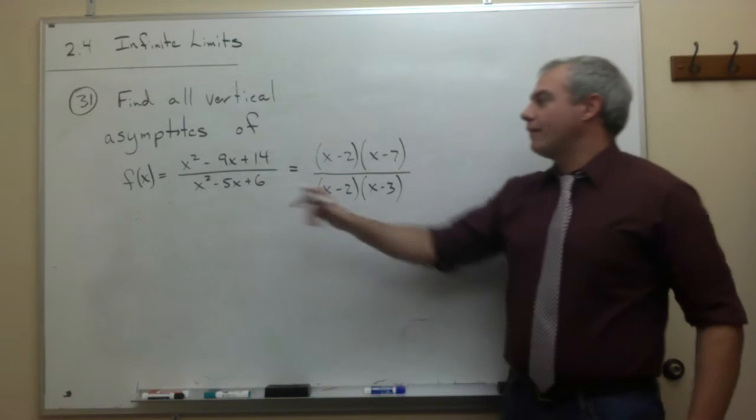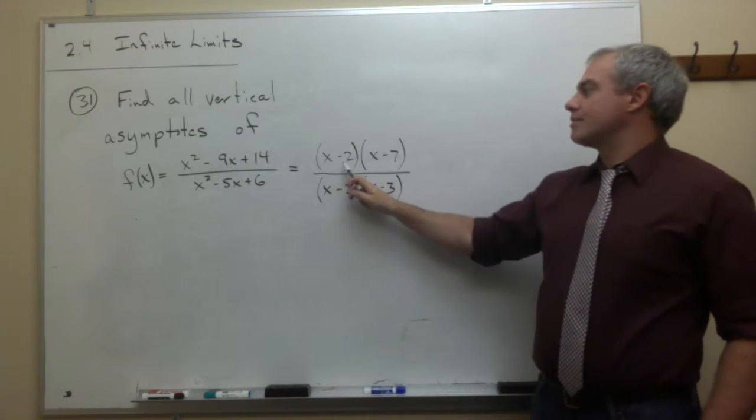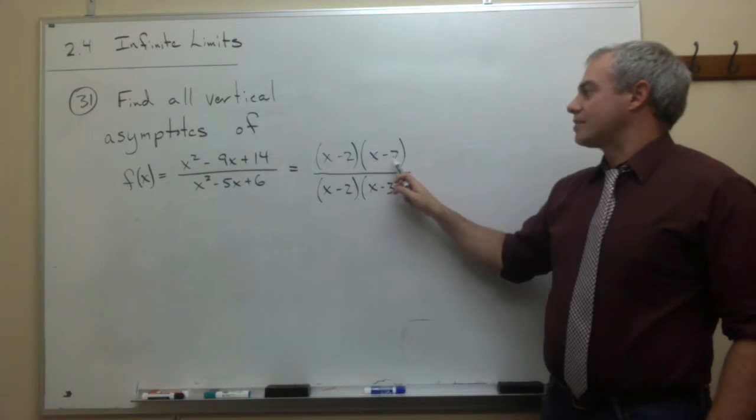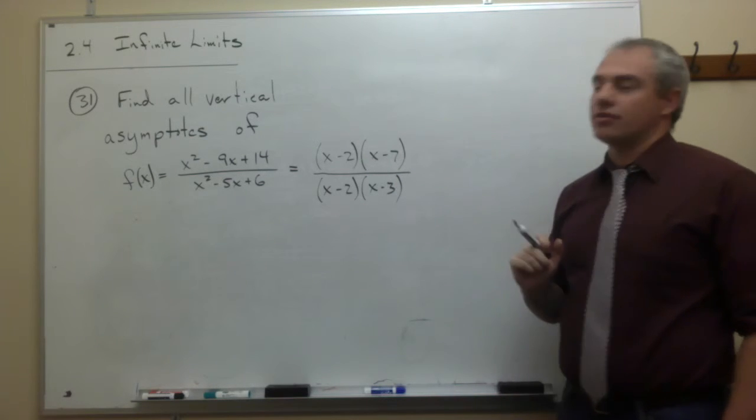So f(x) factors to x minus 2 times x minus 7 over x minus 2 times x minus 3.